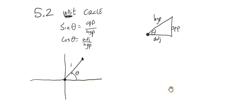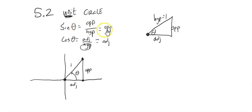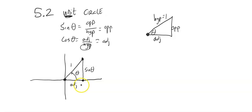If the radius is 1, the hypotenuse is 1, so sine is just the opposite value and cosine is just the adjacent. That means sine of the angle will be the actual height of this triangle, and cosine of this angle will be the width.